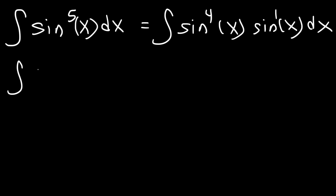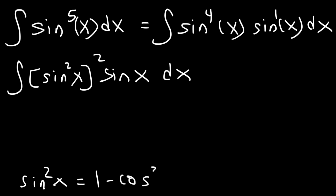Now sin^4 is (sin^2)^2. Now sin^2 + cos^2 = 1. So subtracting both sides by cos^2, sin^2 = 1 - cos^2. And so we need to replace sin^2 with that.